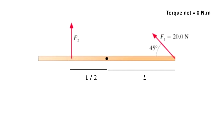We don't know the magnitude of F2, but we know for sure that that force is going completely upwards in the positive y direction. So the angle that it has with respect to the horizontal is 90 degrees. And the distance between the pivot and the physical position where force F2 is applied is half of the distance where the other force is applied, so we can say that distance is L divided by 2.